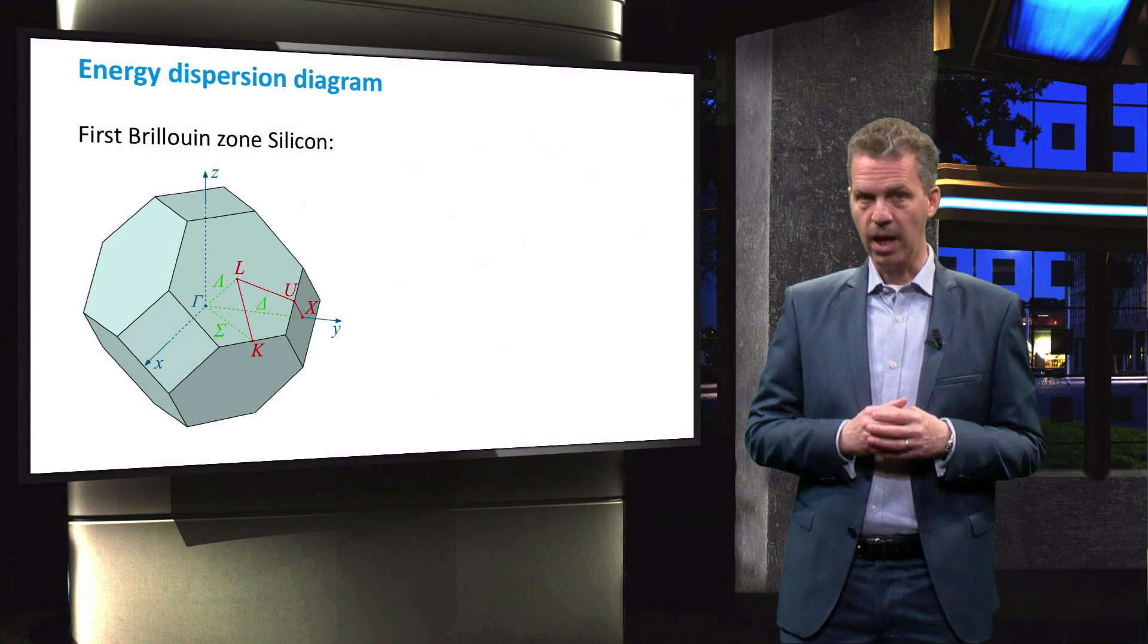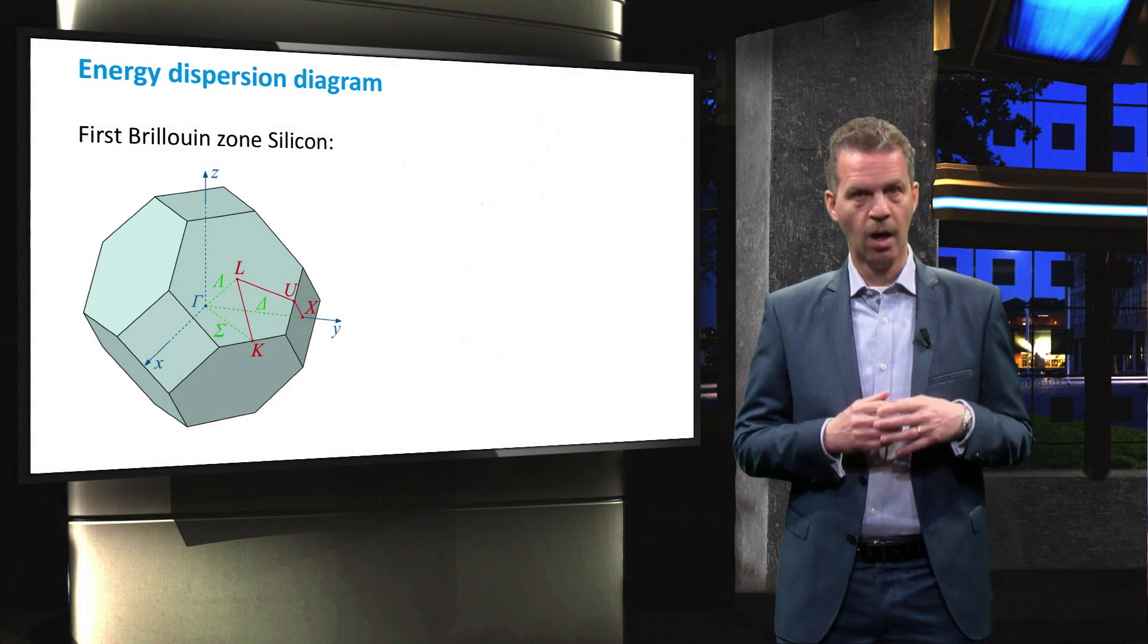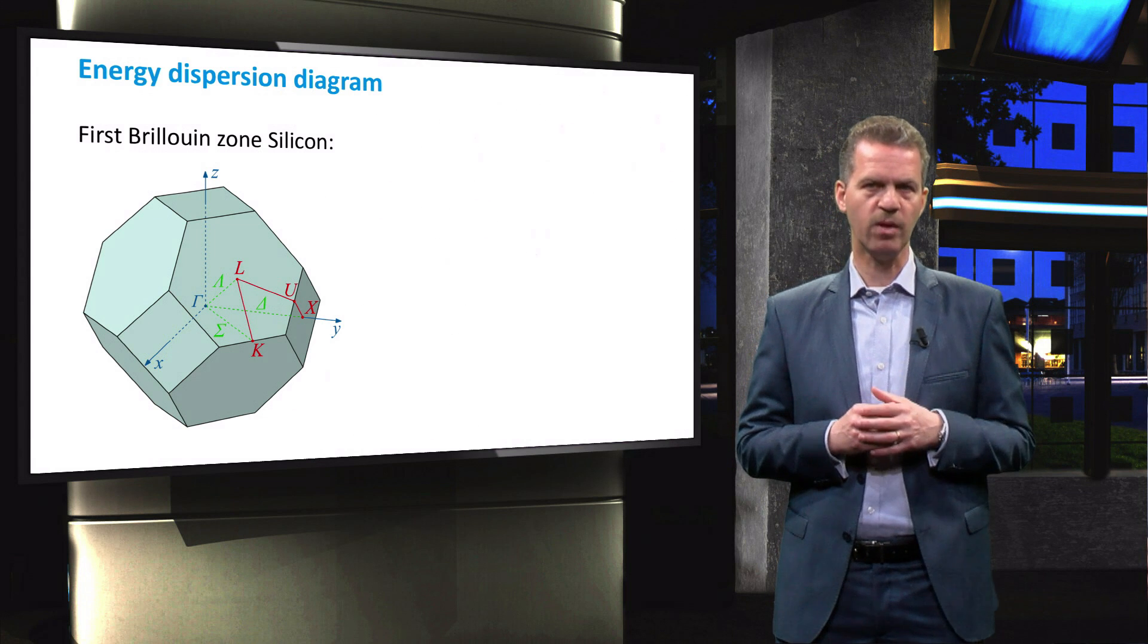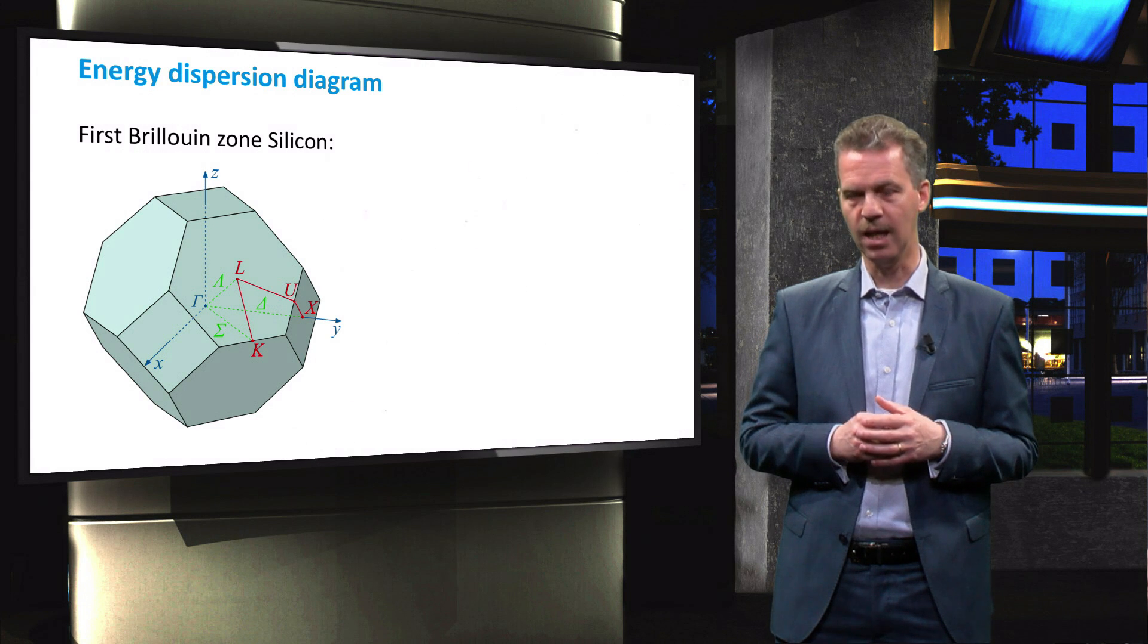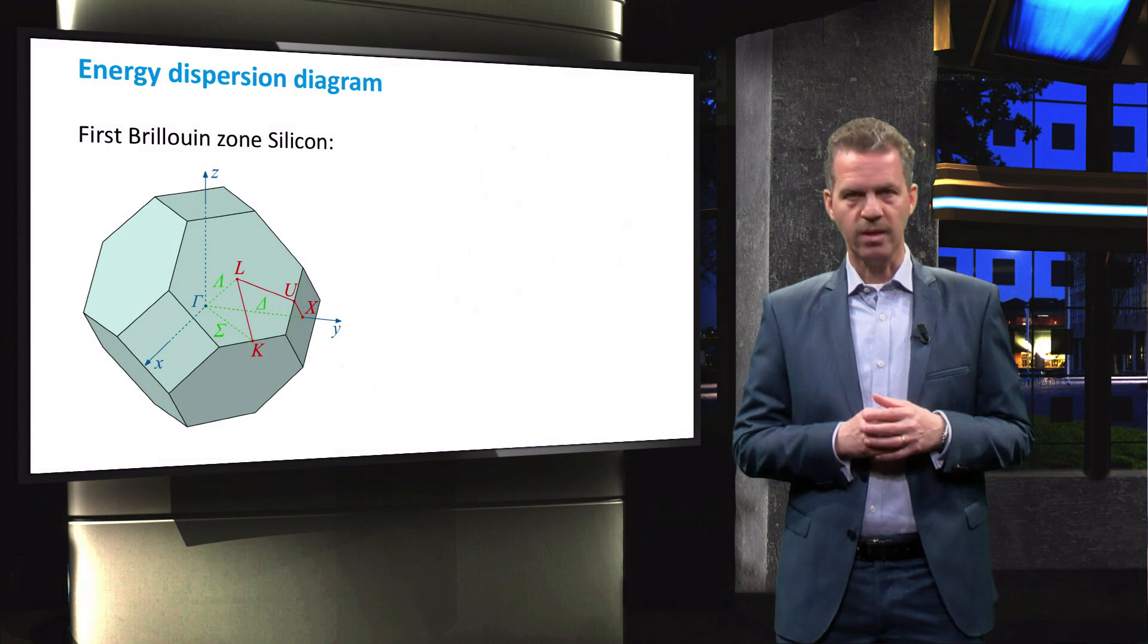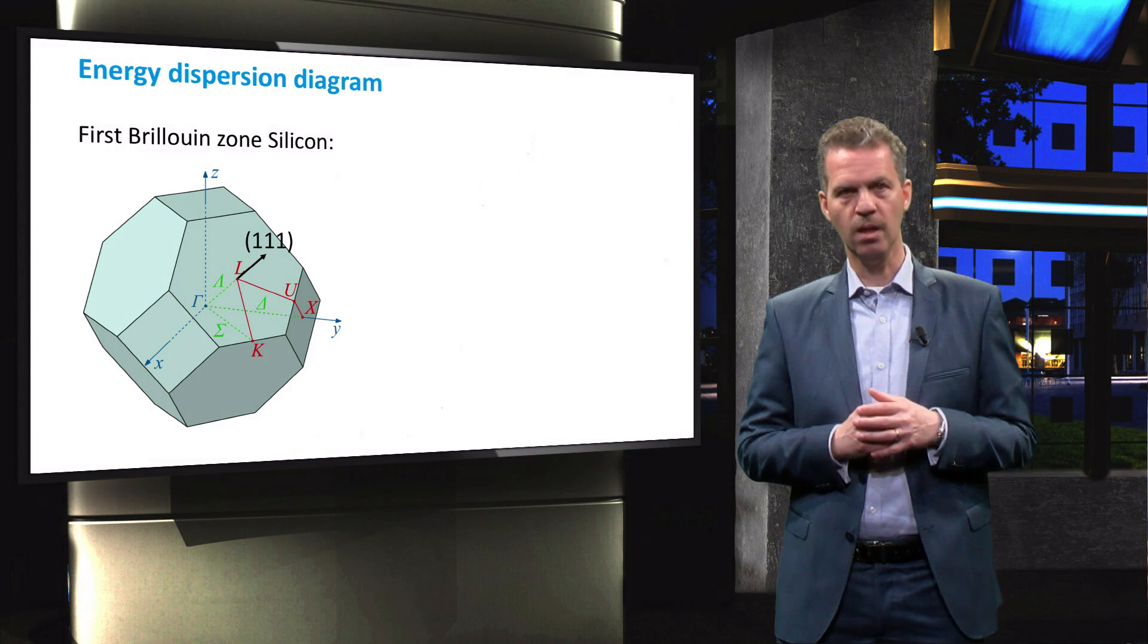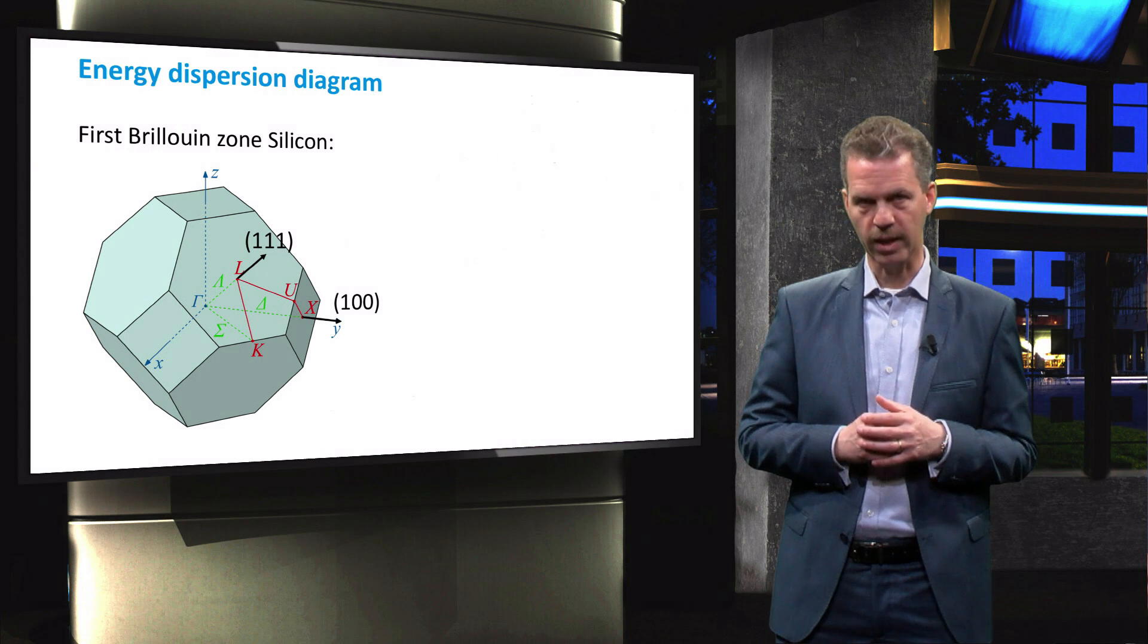The Greek letter gamma represents the center of the first Brillouin zone. The Greek letters lambda, delta and sigma represent different directions towards specific points on the reciprocal lattice indicated by L, X, K and U. The lambda direction in reciprocal space is equivalent to the 1-1-1 orientation in the lattice.